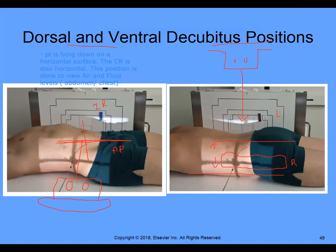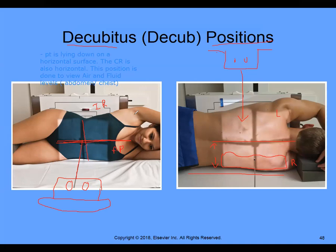These are lateral decubitus positions. She's lying on her left side, so this is a left lateral decubitus — picture one. Picture two: he's lying down on his right side, so this is a right lateral decubitus.